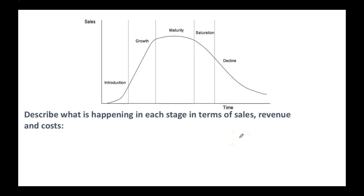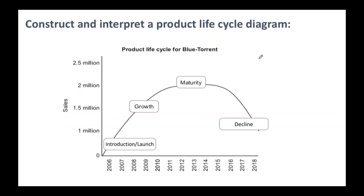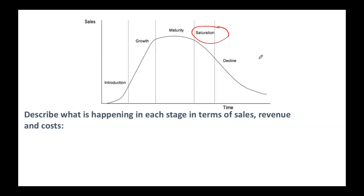Here's a slightly more complicated diagram because it's got an extra stage — saturation. Sometimes they include that, sometimes they don't, just to make it a little bit more confusing. The typical exam questions are either to label a product life cycle or explain what's happening in each stage, and they want you to think about sales, revenue, and costs.